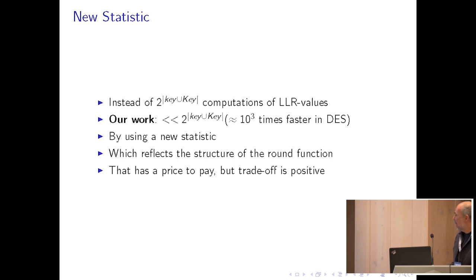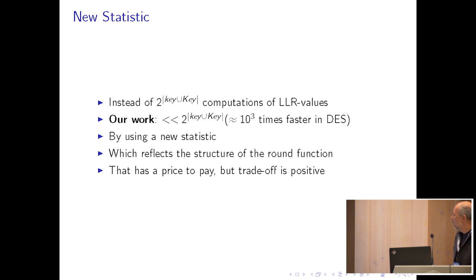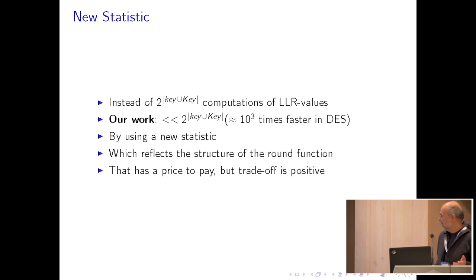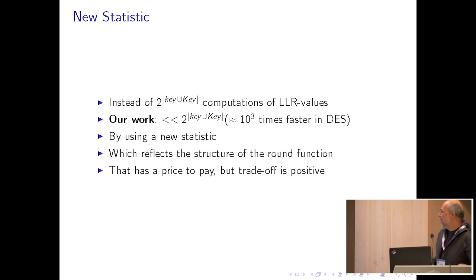Instead, in this work we suggest using a new statistic for which computation is much faster. In our experiments with DES it is a thousand times faster than the conventional LLR statistic. This new statistic reflects the structure of the round function and depends on the S-boxes. Of course our new statistic is not optimal — the LLR statistic is optimal according to the Neyman-Pearson lemma — but since we can solve the statistical problem much faster, the trade-off is positive.